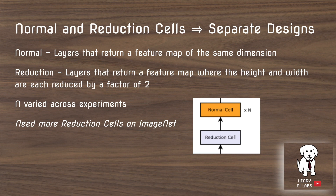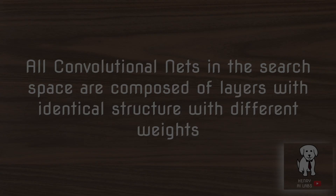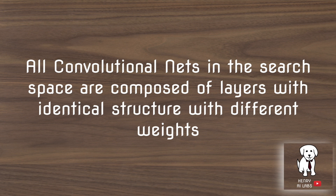When using the ImageNet dataset, more reduction cells are needed because they reduce the number of pixels in each feature map to save computation. All convolutional nets in the search space are composed of the designed layers from the search algorithm — the normal cell and the reduction cell.